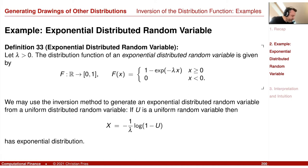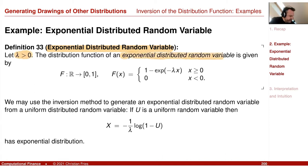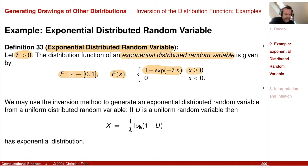An exponentially distributed random variable has a parameter λ > 0. The distribution function F is given by F(x) = 1 − e^(−λx) for x ≥ 0, and F(x) = 0 for x < 0. So the probability that the random variable x is below zero is zero — the random variable cannot be negative.